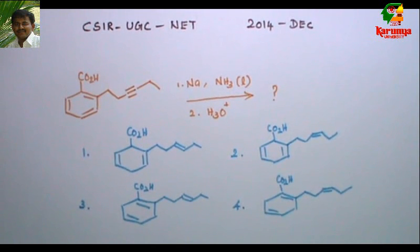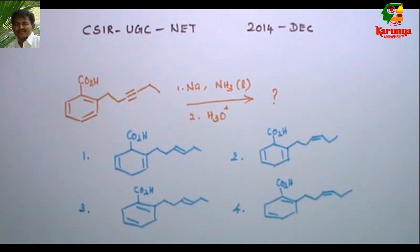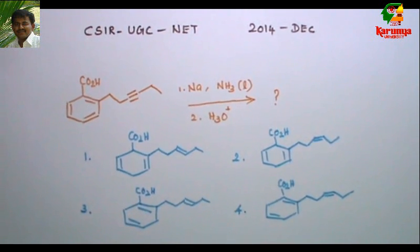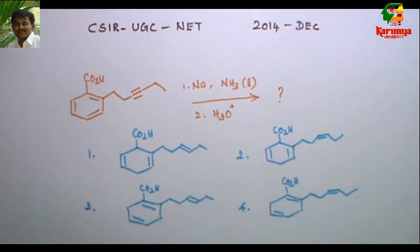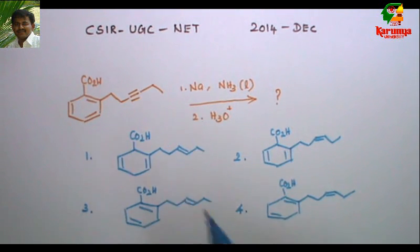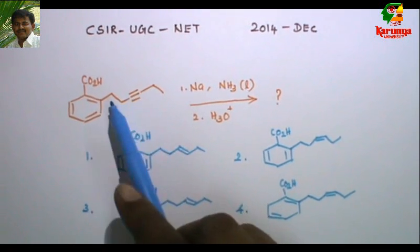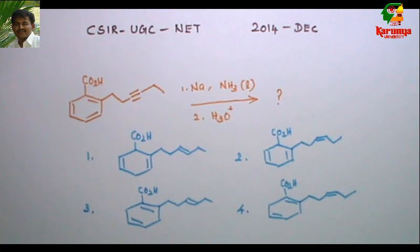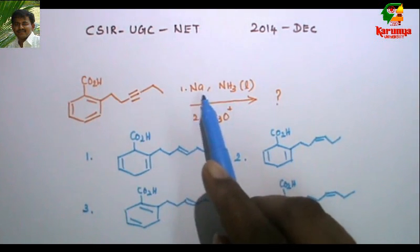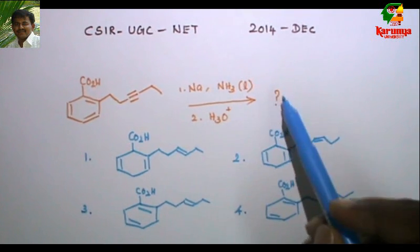Today I am going to solve a problem on the reaction of alkali metal in the presence of liquid ammonia. You can find this problem in CSIR NET exam 2014 December. The problem: when this benzoic acid which has an alkyl moiety in the side chain is treated with sodium in liquid ammonia followed by hydrolysis, what is the product?